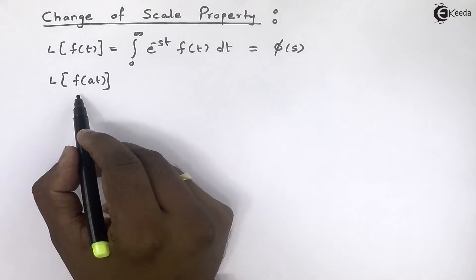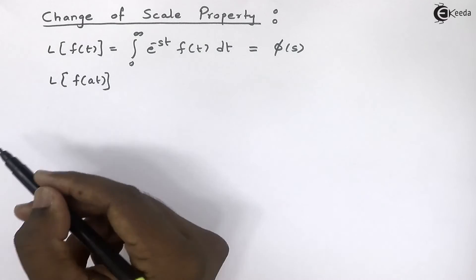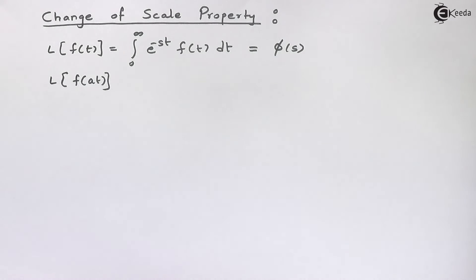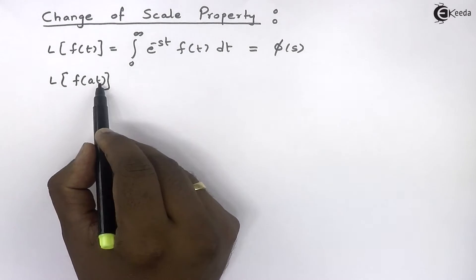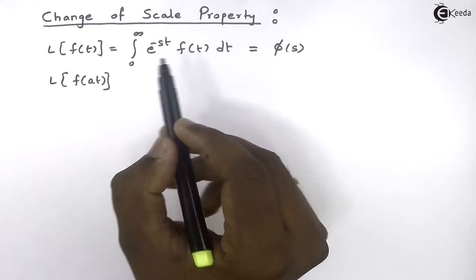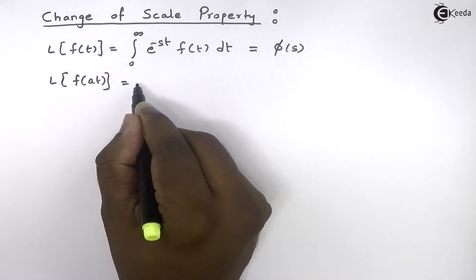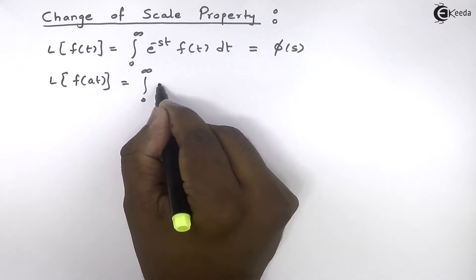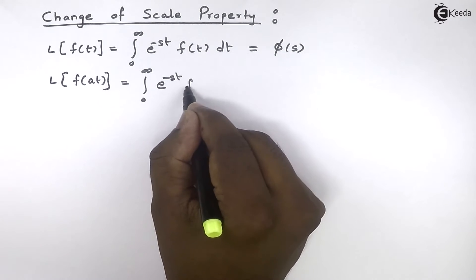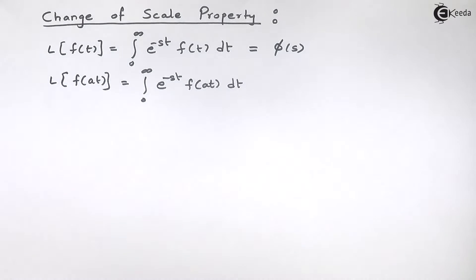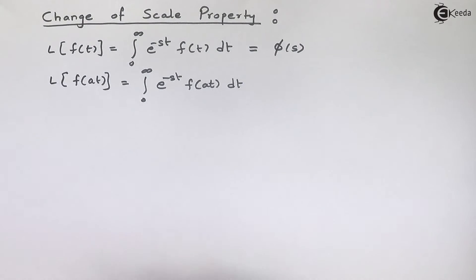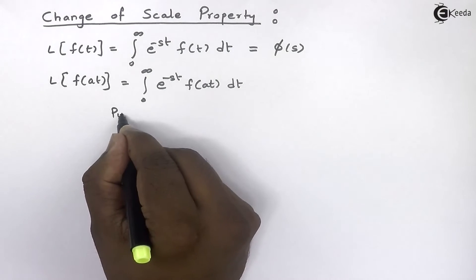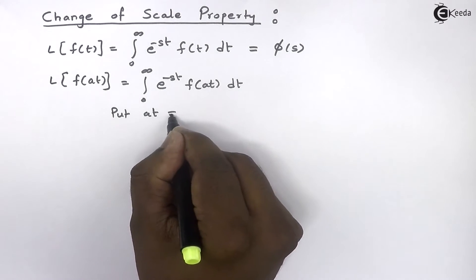To find the Laplace transform of f(at), we will again use the definition of Laplace transform. We substitute f(at) in place of f(t), so by definition we get the integral from 0 to infinity of e raised to minus st times f(at) dt. To evaluate this integration we will use the method of substitution, putting at equal to u.